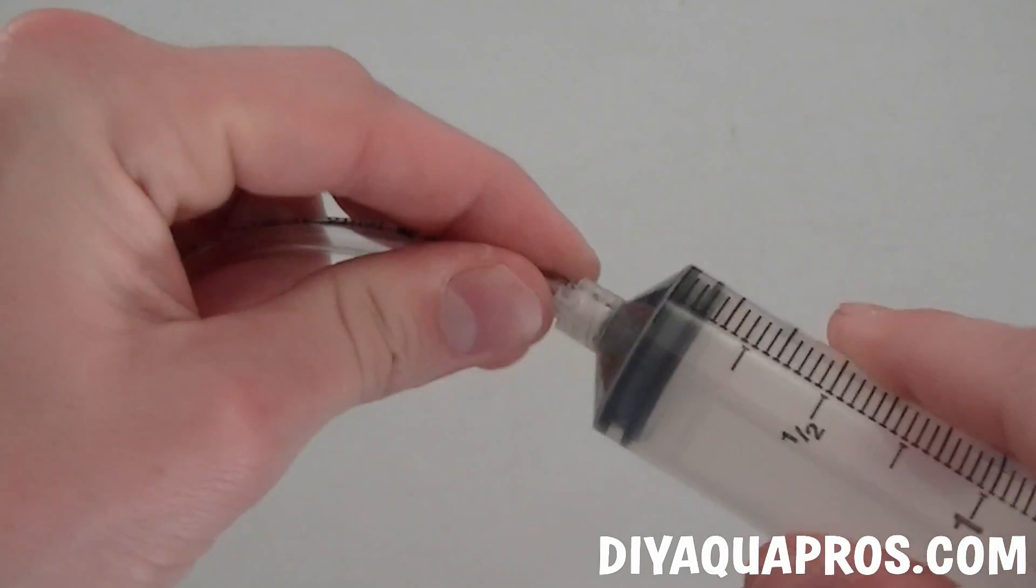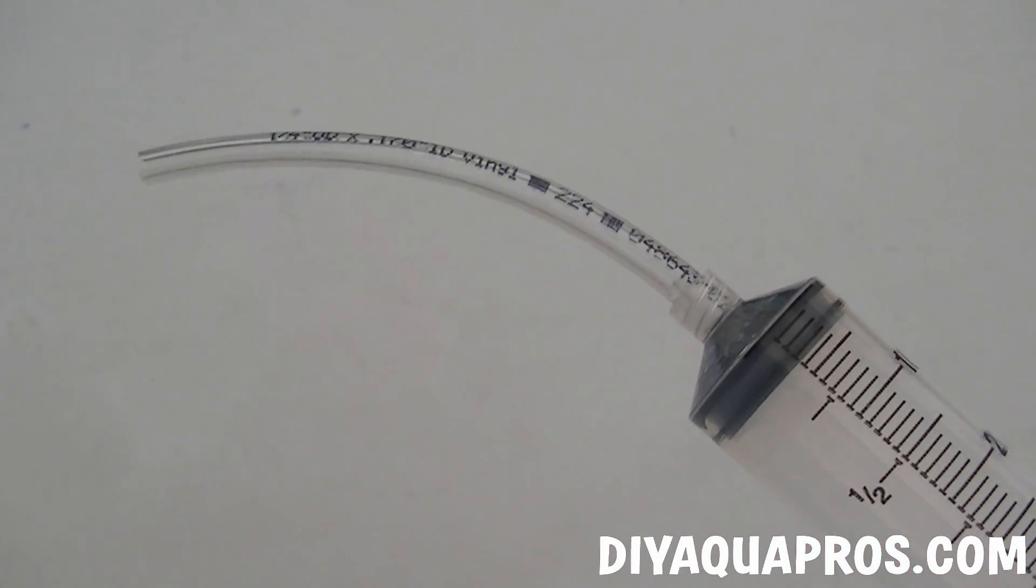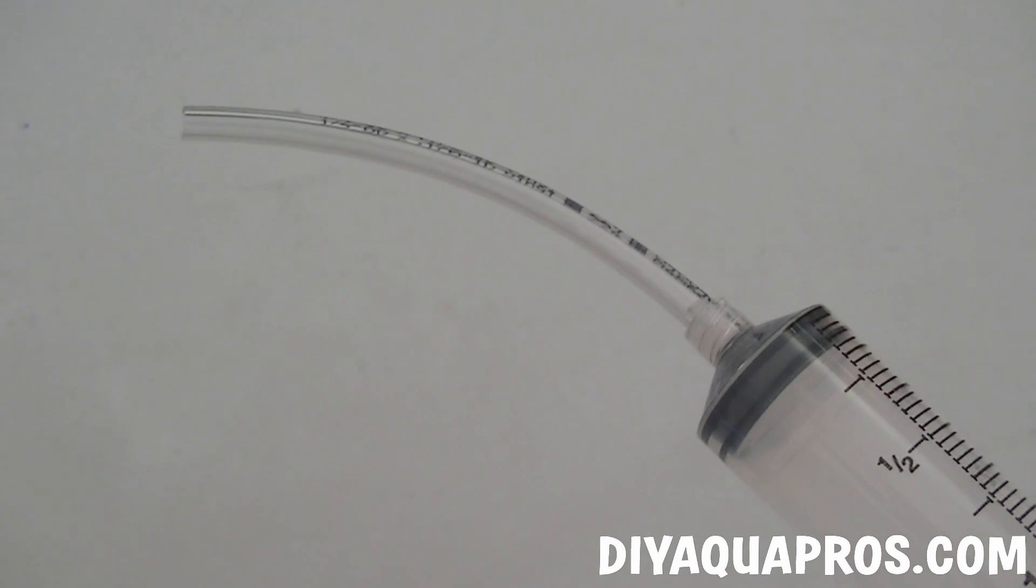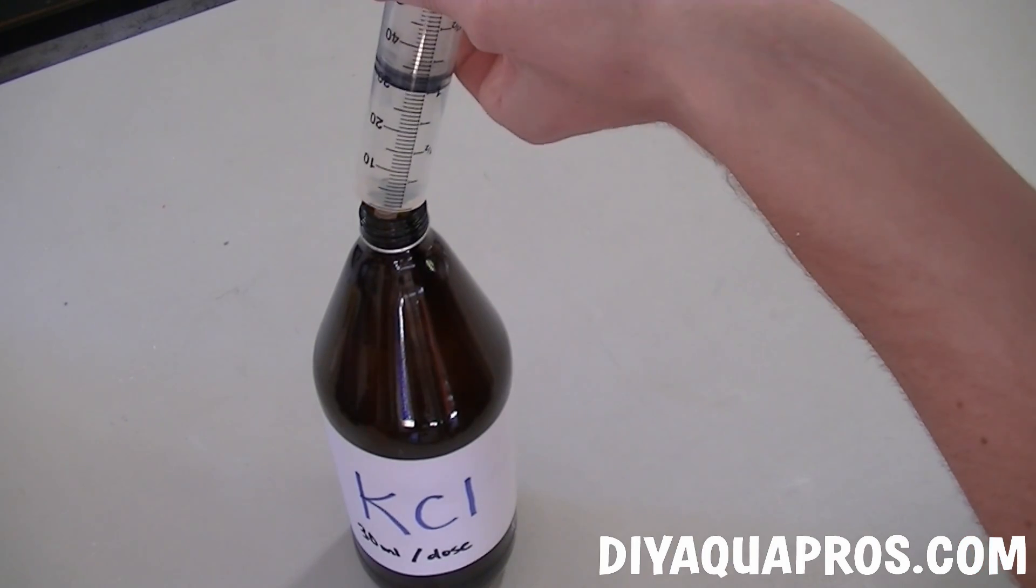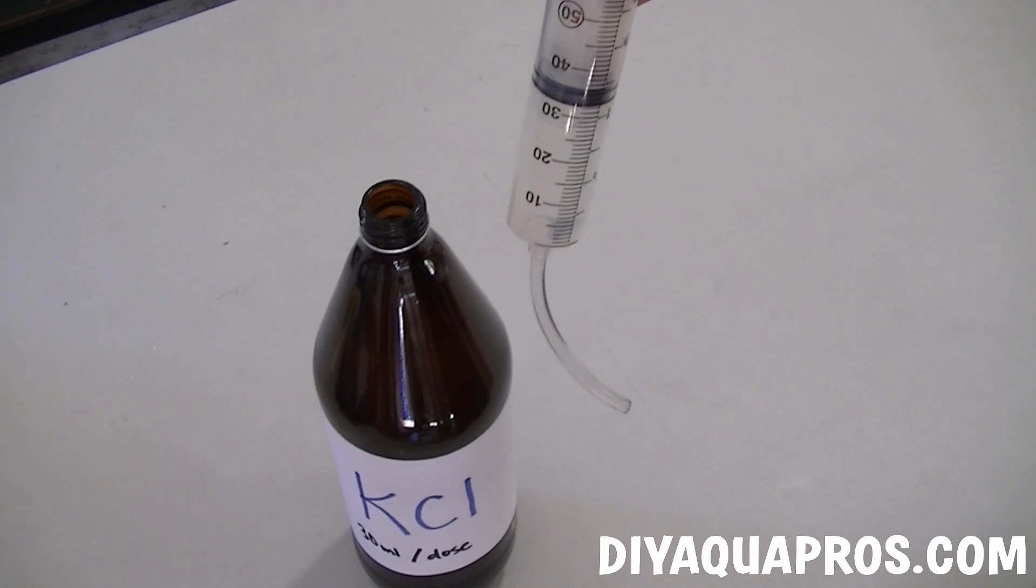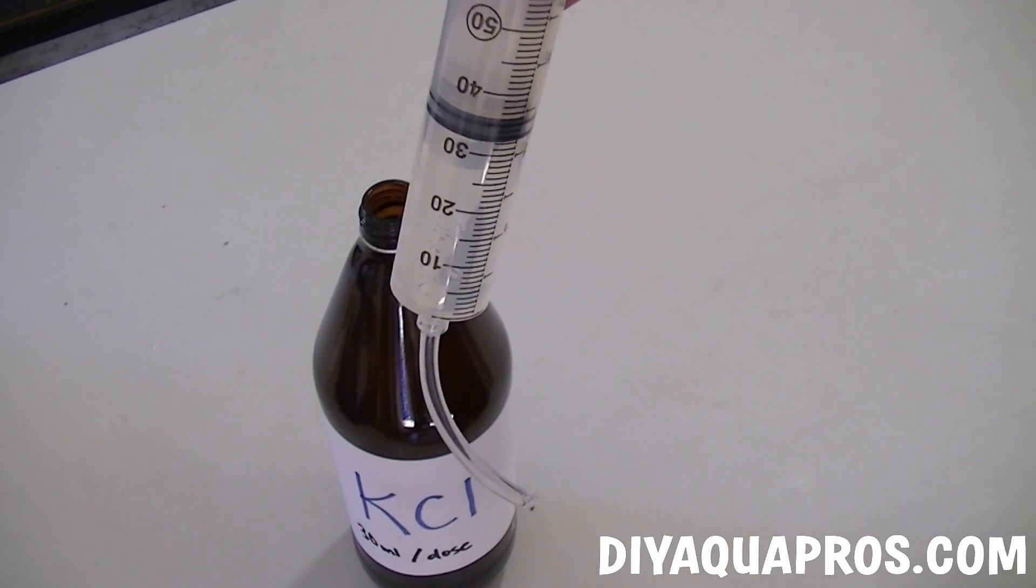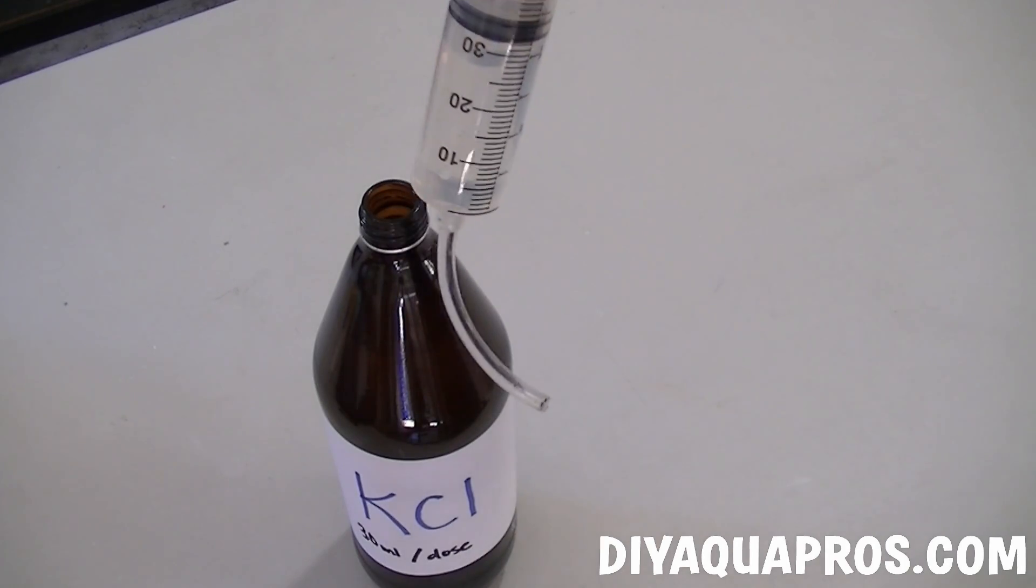To dose our aquarium we start by attaching a piece of vinyl tubing. Don't forget that every 4 inches of this tubing will account for roughly 1 mil of solution. So when we go to extract each dose we want to pull the plunger on the syringe back to where the liquid reaches the 29 mil mark. This will account for a full 30 mils because 1 mil of solution is in that vinyl tubing. And now you're ready to dose your aquarium with a concentration of 20 milligrams per liter potassium.